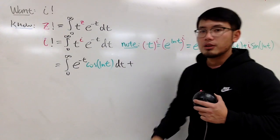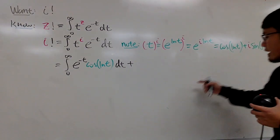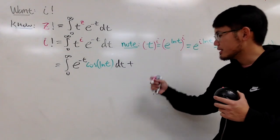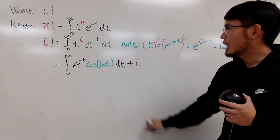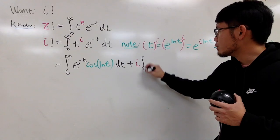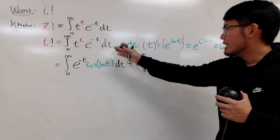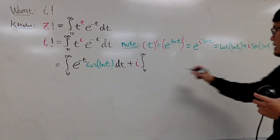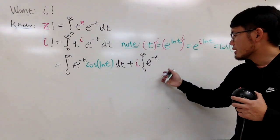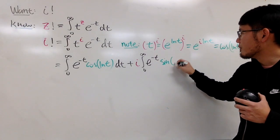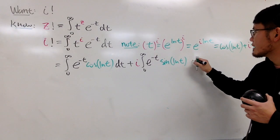For the second part, we have the i. Let's just take that to the front. And, we have the integral from 0 to infinity and e to the negative t power times this. So, we have e to the negative t times sine of ln t now, like that.